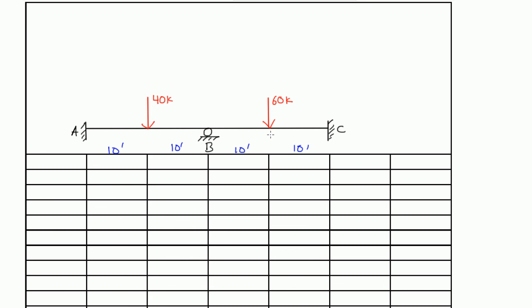When we do moment distribution, what we're really trying to do is look at the joint in the middle and get the moments on the left side and the right side equal but opposite. So moments around joint B would be equal and opposite, or if you added them together, you'd get zero. Normally you have a chart with all these numbers and arrows, and we'll go row by row and explain what each row means.